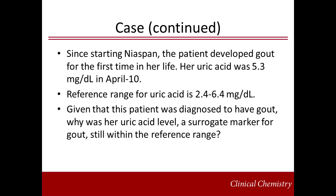Since starting Niaspan, the patient developed gout for the first time in her life. Although synovial fluid examination is used for diagnosis, uric acid is used as a surrogate marker for gout. Her uric acid was 5.3 mg/dL in April 2010. The reference range for uric acid is 2.4 to 6.4 mg/dL. Given that this patient was diagnosed with gout, why was her uric acid level — a surrogate marker for gout — still within the reference range?